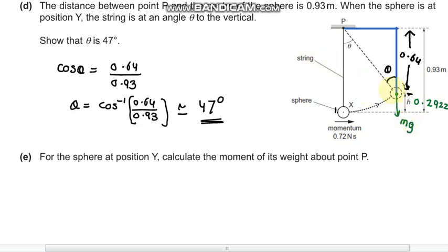We need to calculate this distance, which we can find easily because now we have theta and the lengths. Now we need to find this d. Sine theta equals d over 0.93.